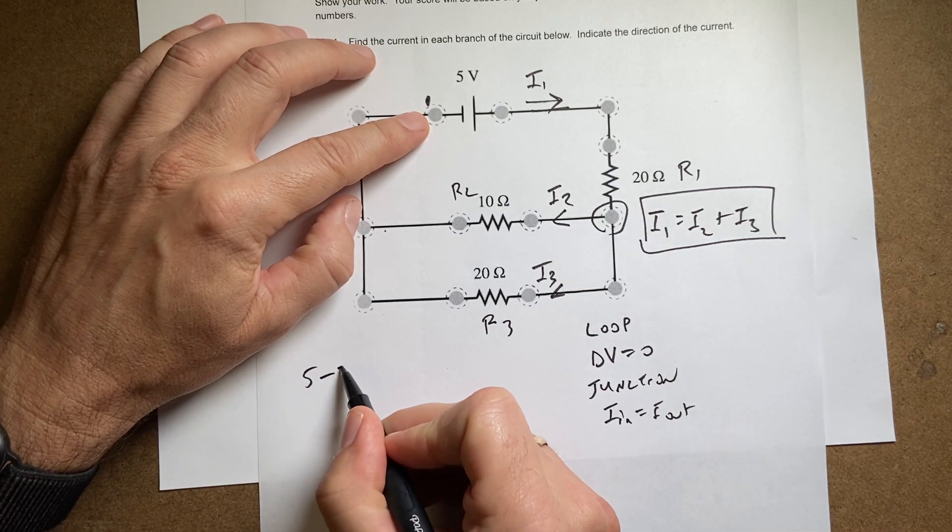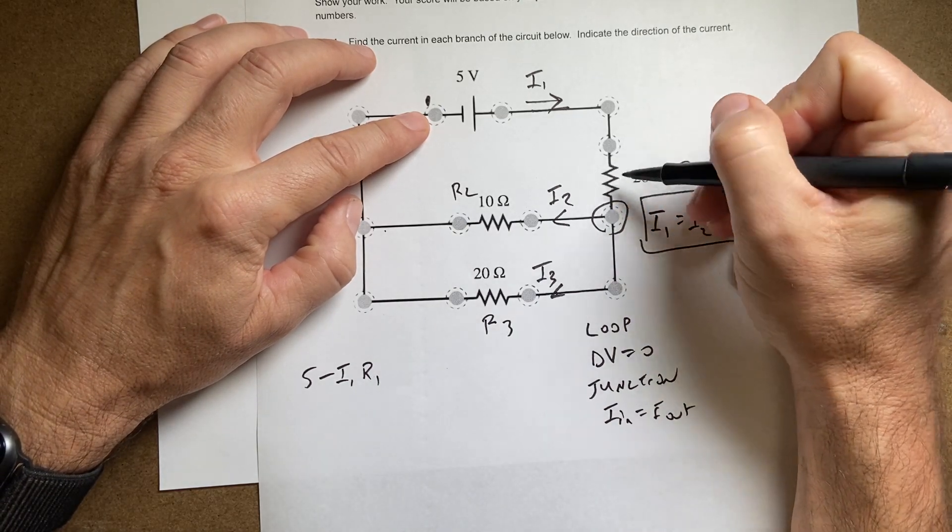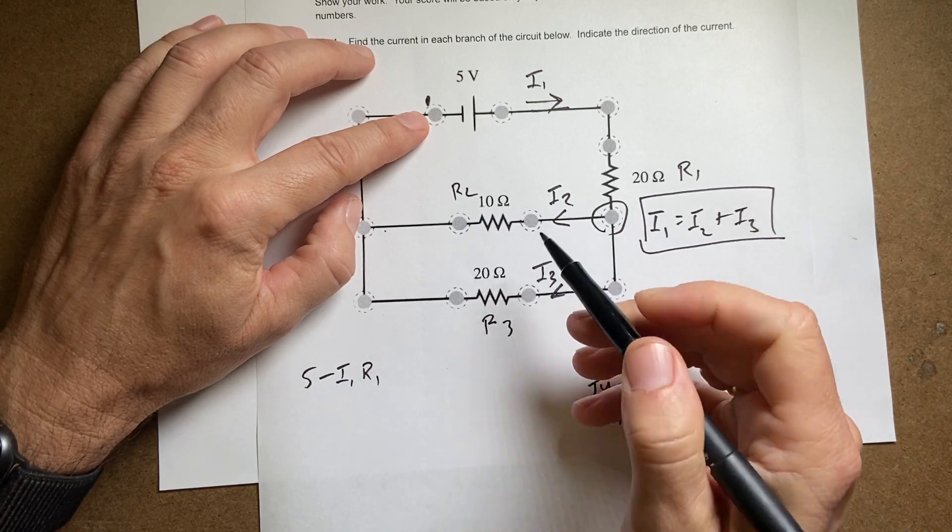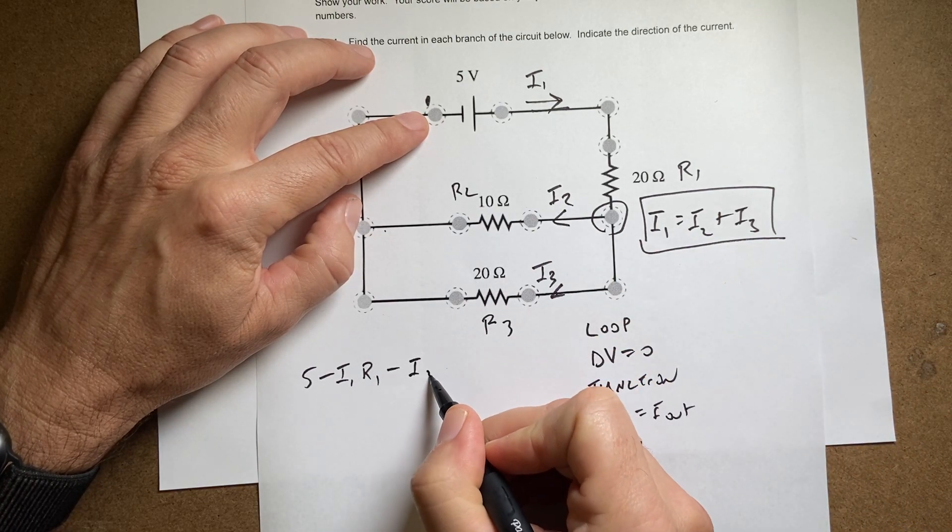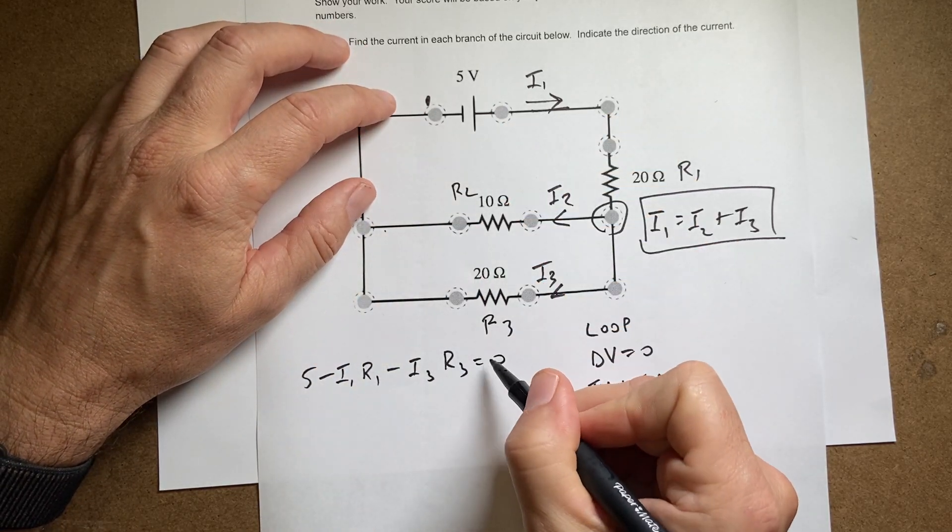It's gonna be a minus I1 R1. That's the voltage drop across that resistor. Now I keep going this way. I'm going to drop across that. It's gonna be minus I3 R3 and then I get back to there and so it has to be equal to zero.